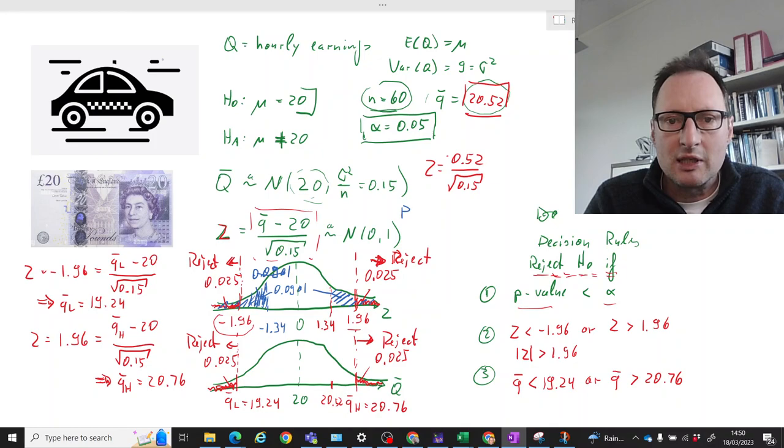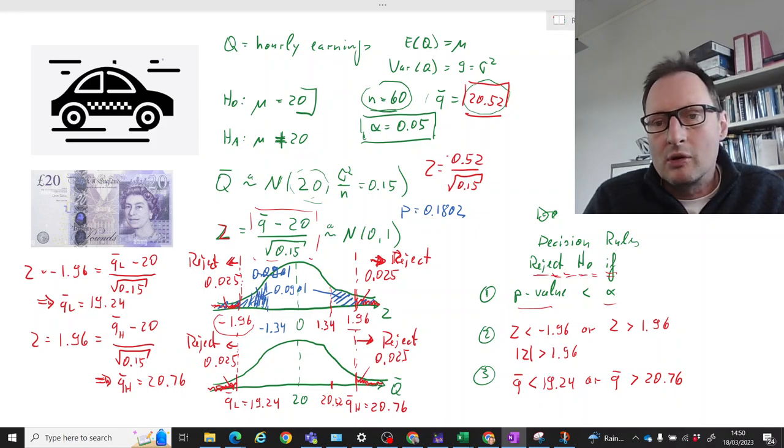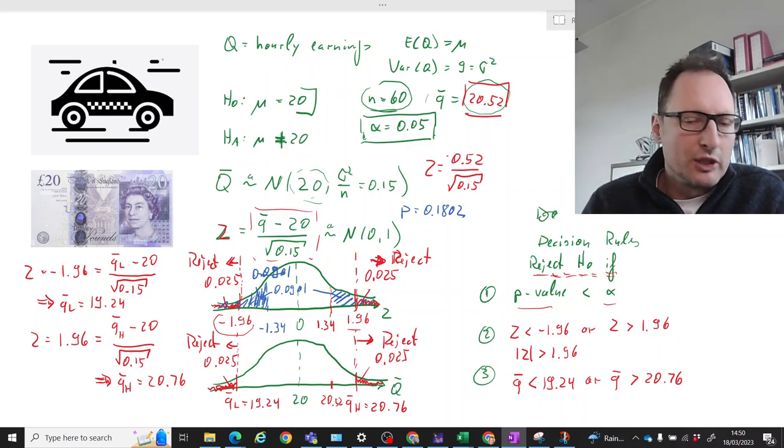So the p-value here is going to be 0.1802. That means with none of the three rules will we reject the null hypothesis, because the p-value is not smaller than 5 percent - it's 18 percent. So which of these rules you use really doesn't matter. If you do it correctly, you will get the same decision with all of them.